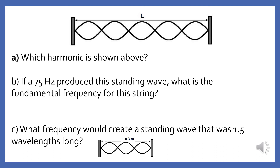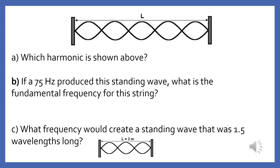Which harmonic is shown above? Since the standing wave contains 5 times more antinodes than the fundamental, this is the fifth harmonic. If a 75 Hz source produced this standing wave, what is the fundamental frequency for this string? Since this is the fifth harmonic, the fundamental frequency would be 15 Hz, since 5 times 15 is 75.